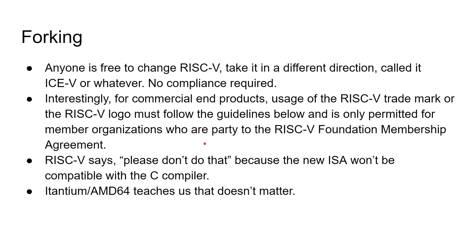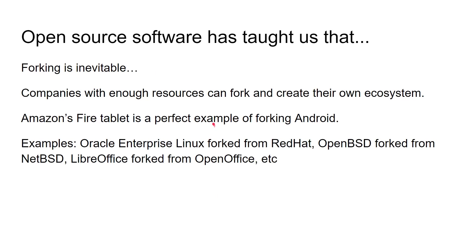Nobody is forcing you to build a RISC-V processor that works like or is compatible with anybody else's RISC-V processor. Open source software has told us one thing: forking is inevitable. It will happen. Whether it succeeds after it forks is a whole different thing. But any company with enough resources can fork and create its own ecosystem. Amazon's Fire tablets are a perfect example of forking Android — they run Android apps, have their own set of services and their own app store, but it's all based on Android. Any company with enough money can fork RISC-V, and if it has enough weight behind it, it can take it in its own direction and nobody can do anything to stop them.